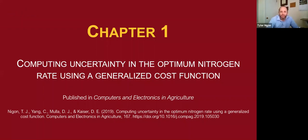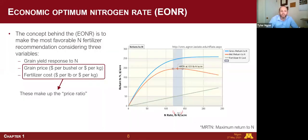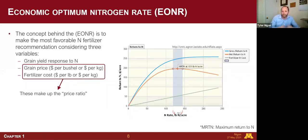Getting into the research, I'll start with the chapter published in Computers and Electronics in Agriculture two years ago, titled 'Computing Uncertainty in the Optimum Nitrogen Rate Using a Generalized Cost Function.' The EONR is the most favorable nitrogen fertilizer recommendation considering three variables: first, the grain yield response to nitrogen — we put in a field trial with many different nitrogen rates, measure yield at the end of the year, model the relationship, and get the blue curve. The other two are grain price and fertilizer costs.